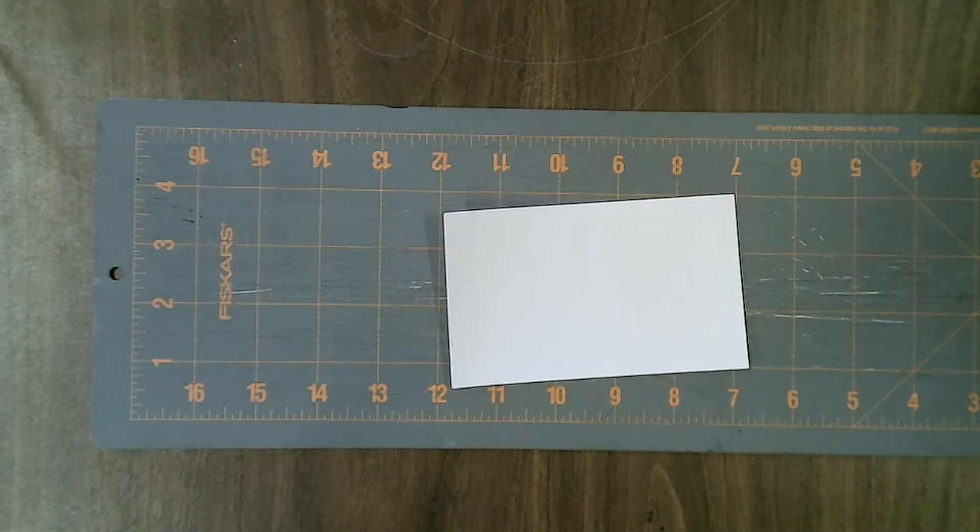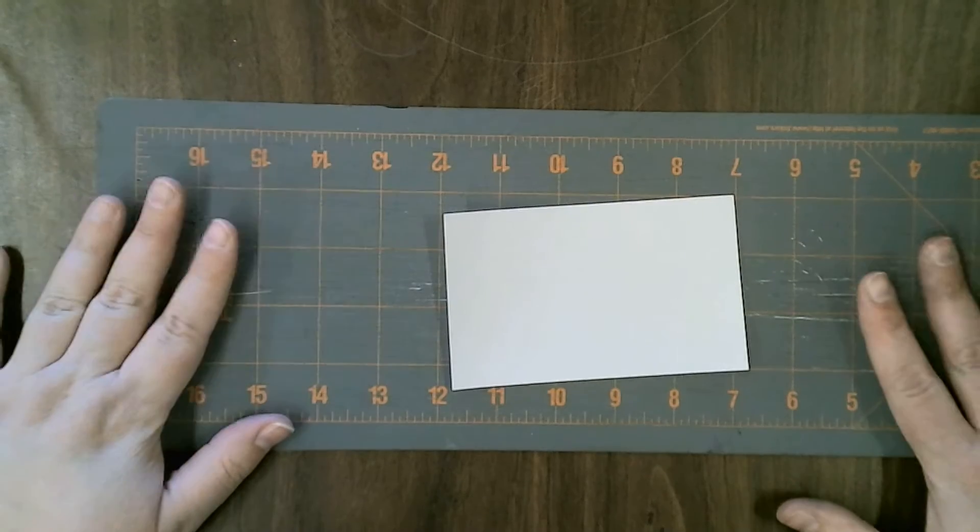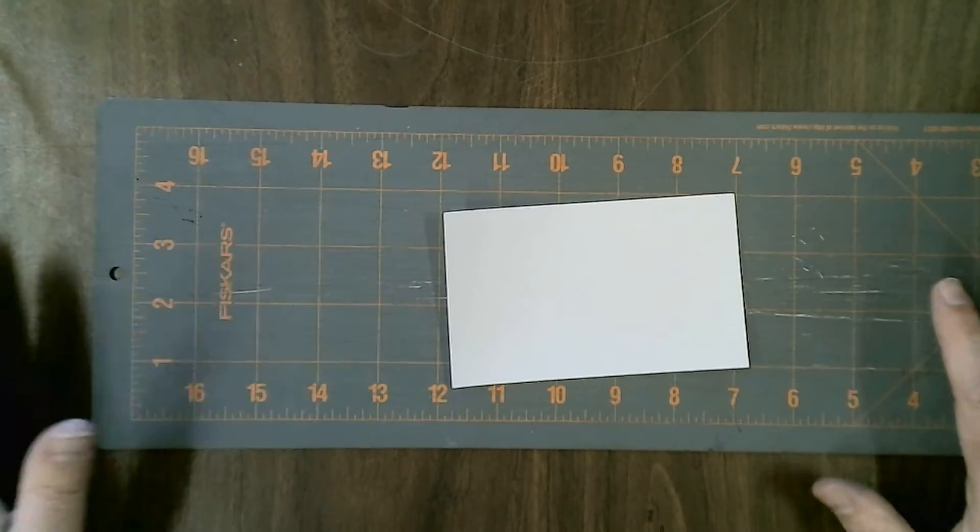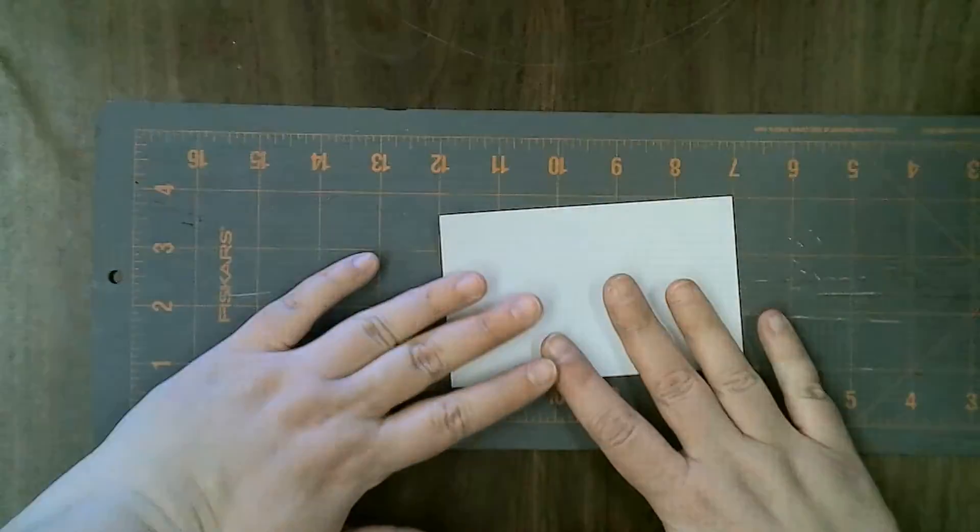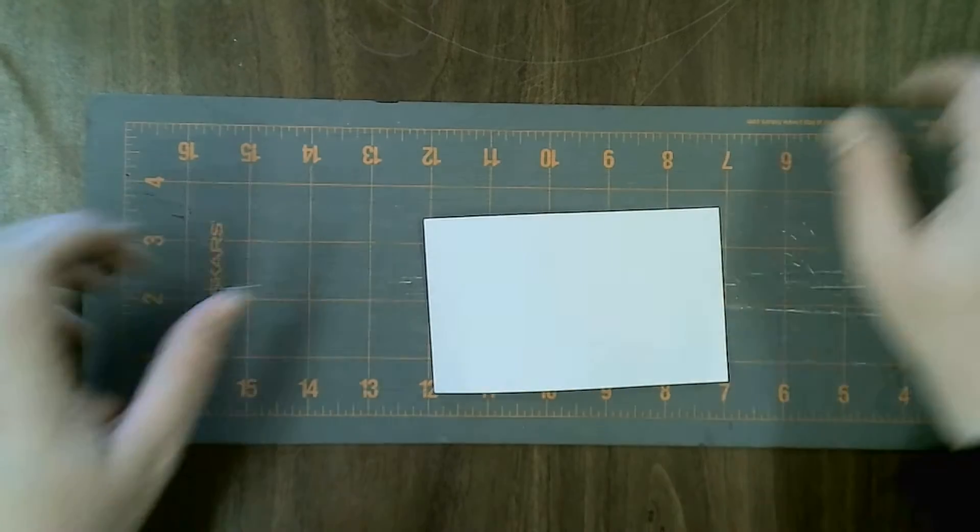The viewfinder station is on the very back table. It's set up with a big cutting mat because we're using exacto knives. Do not cut on the table tops. There are little three by five cards back there.